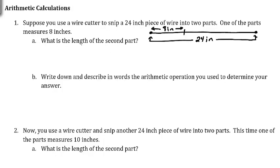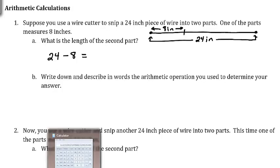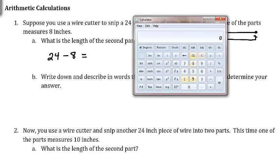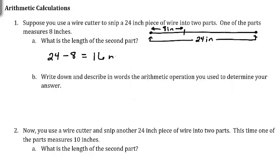We want to figure out what is the length of the second part. This first part is 8 inches — what is remaining? This whole wire was 24 inches, so we started out with 24 inches and we removed from it 8 inches. We would subtract that: 24 minus 8 is 16 inches. This remaining piece is 16 inches.